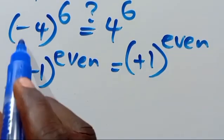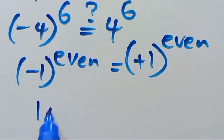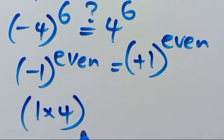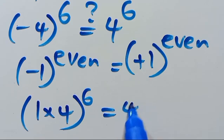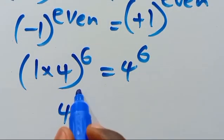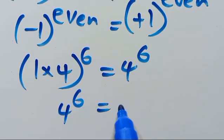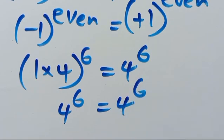So in the case of negative 4, we have negative 1 times 4, all to the power of 6, which equals 4 to the power of 6. Therefore 4 to the power of 6 equals 4 to the power of 6, and this is satisfied.